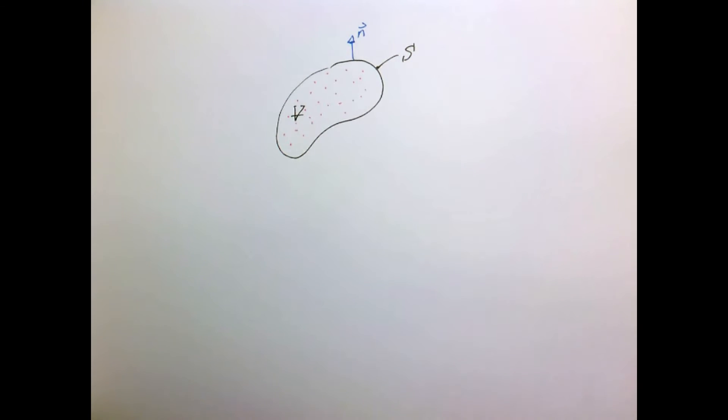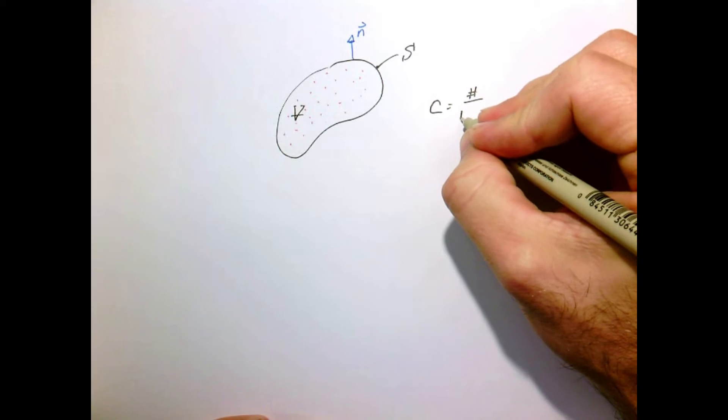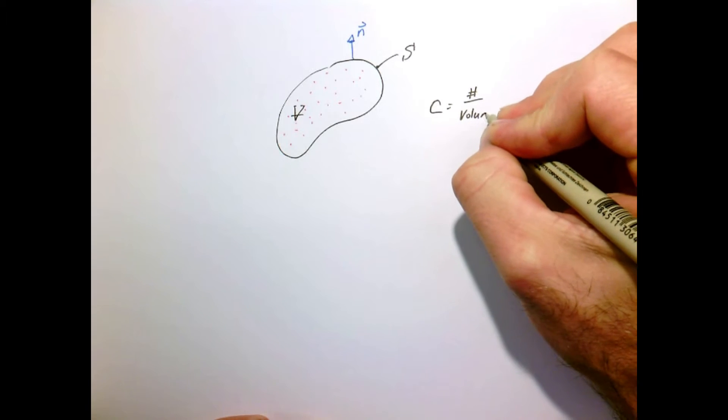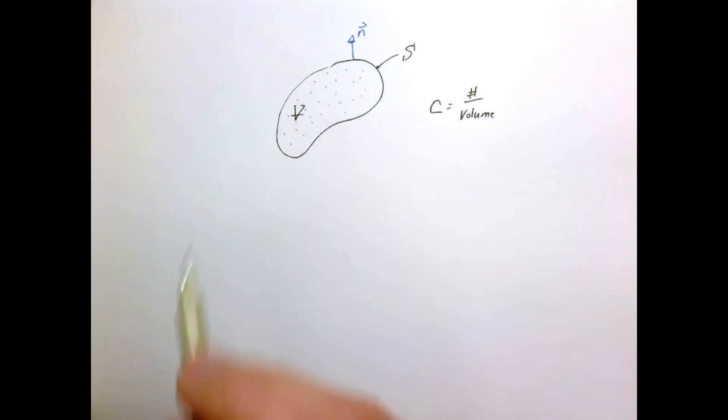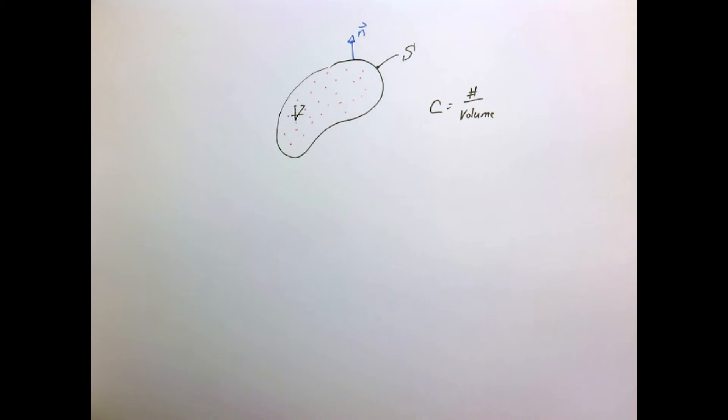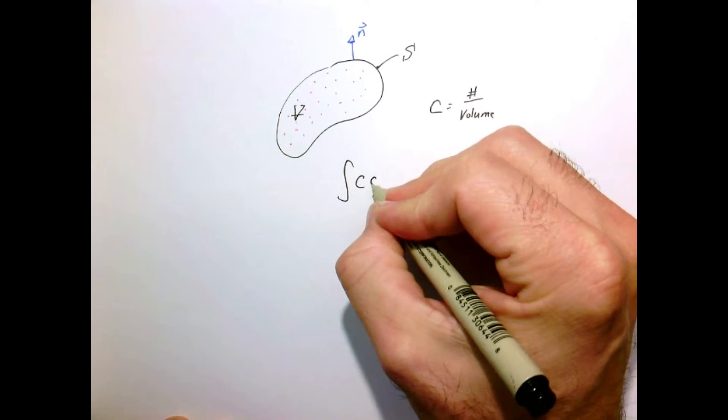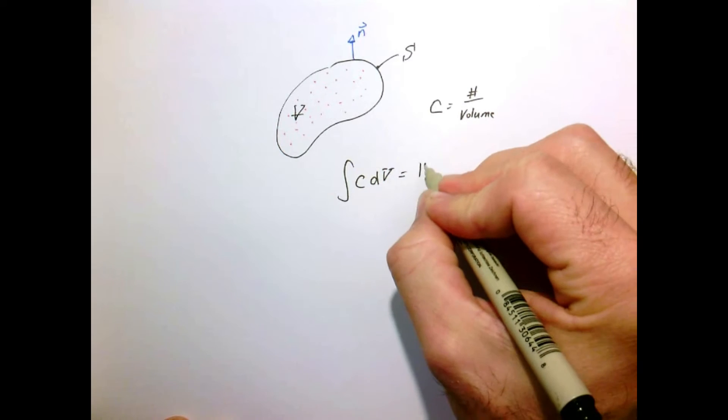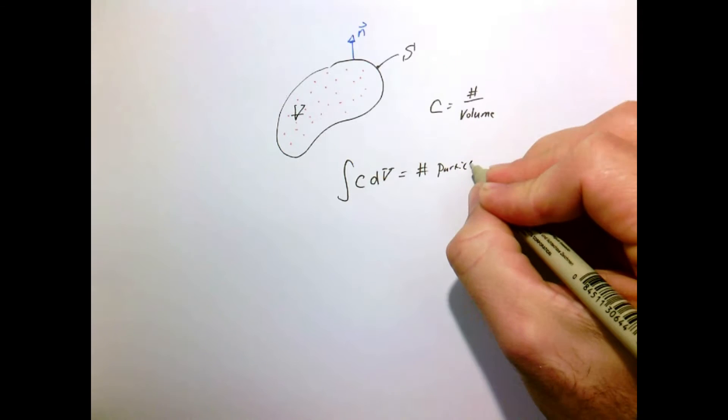We'll consider there's many, many molecules, like Avogadro's number, such that we can consider the concentration field C, given as number of particles per unit volume, to be a continuum so we can talk about a local concentration at a point. If we integrate the concentration over the volume, that gives us the total number of particles or molecules inside our volume.